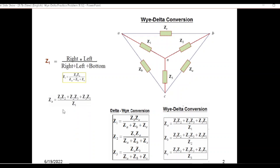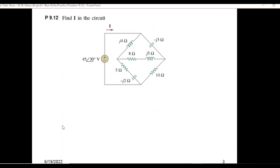And this is when you're converting from Y to delta — this is the formula. Now, practice problem 9.12 — this is the circuit. We have to find the current. There's no way that we can simplify this circuit other than converting this delta into Y or Y into delta form.